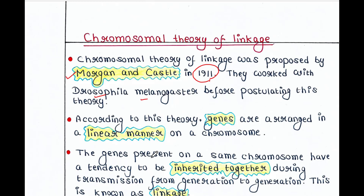According to this theory, genes are arranged in a linear manner on a chromosome. Suppose this is chromosome 1 — different genes are placed in this way. So, genes are arranged in a linear manner on a chromosome.